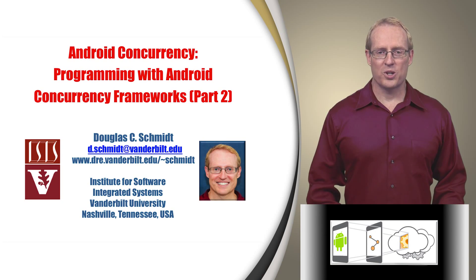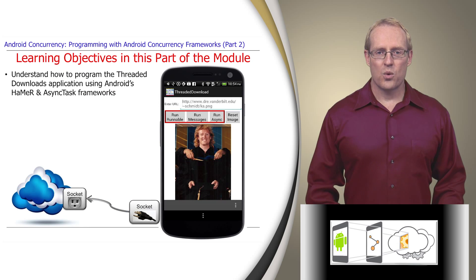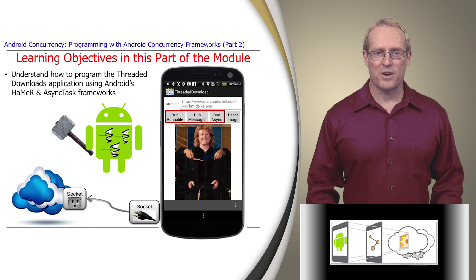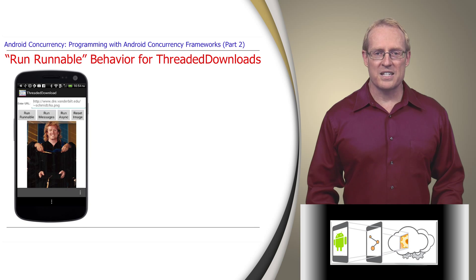Welcome to the next part of the module on Android Concurrency Frameworks, which continues our analysis of the Threaded Downloads application. In this part, we'll show how to implement three different concurrency models using the Android Hammer and AsyncTask Frameworks. We'll start by analyzing the simplest of the three concurrency models, which is triggered when the user selects the Run Runnable button on the user interface.